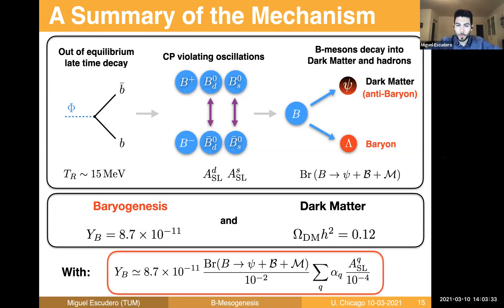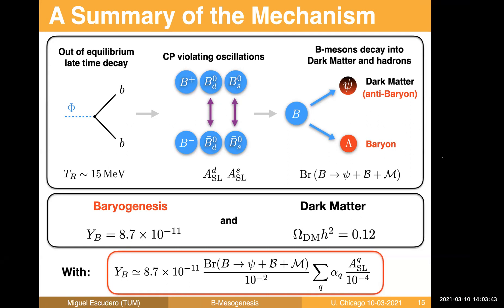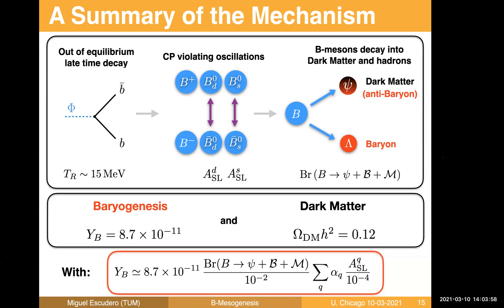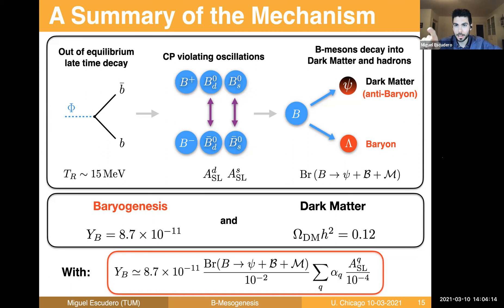Audience question: will you take the dark anti-baryon state to be five times heavier than the proton to explain the dark matter to baryon ratio of five, or do you address this another way? Answer: that's a very good point, and I'm about to discuss it. This particle cannot weigh 5 GeV otherwise it cannot come from the B meson decay, so I'll explain the full dark sector setup momentarily.